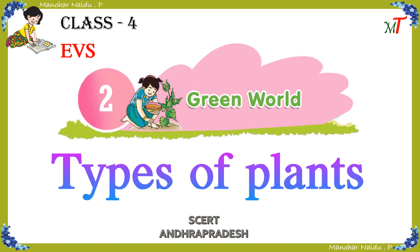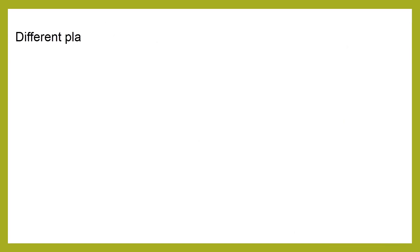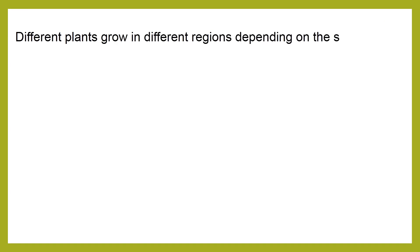Types of Plants. One day, Hima and her grandfather went to a garden. Hima observed different types of plants in the garden. She asked her grandpa, 'All kinds of plants grow everywhere?' Her grandpa explained that different plants grow in different places and different regions, depending on the soil and climate.